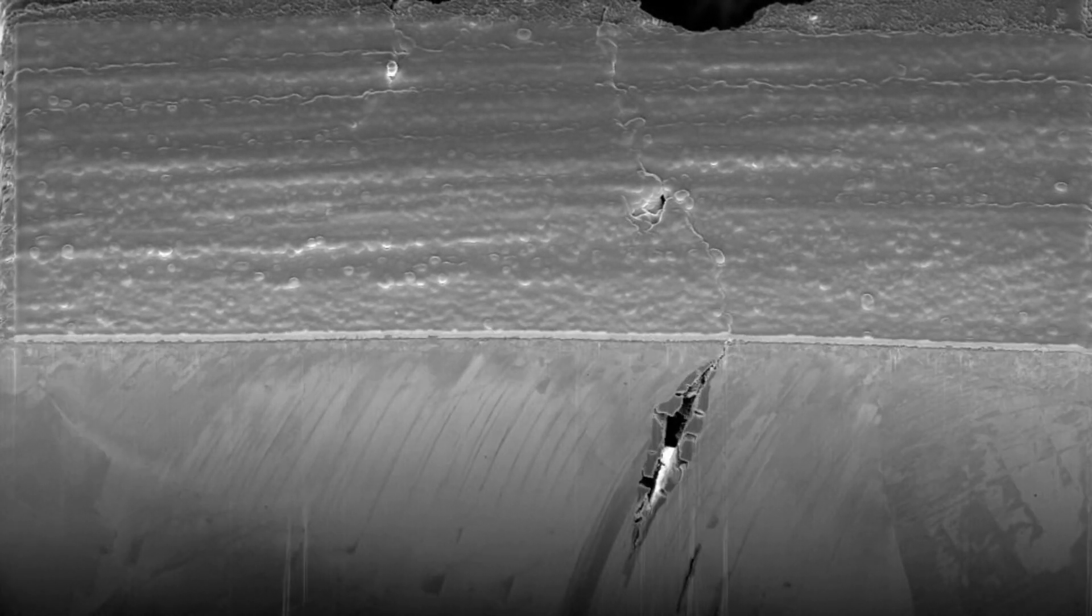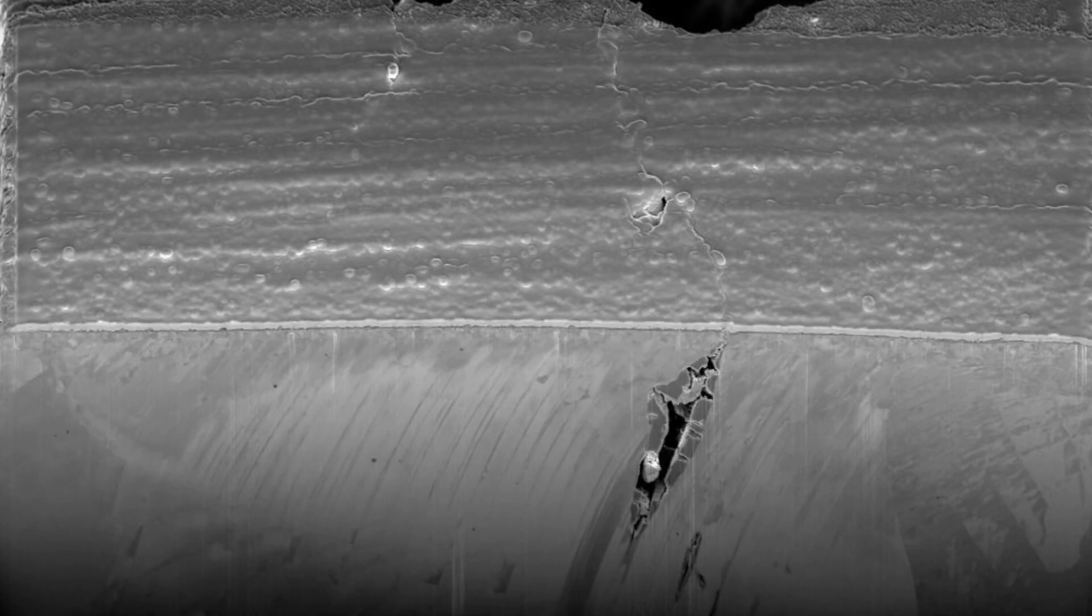This allows us to observe the pitting and cracking damage beneath the surface of the material and link it to the local microstructure. We can see that the localized attack tends to follow slip lines beneath the surface that were introduced during grinding.